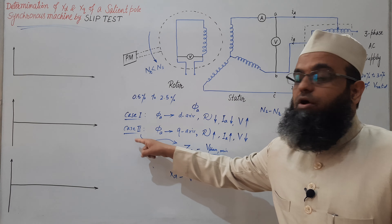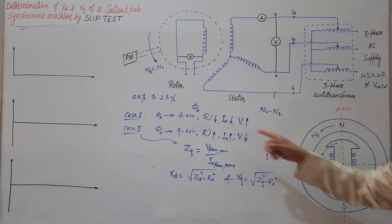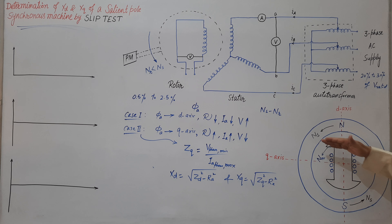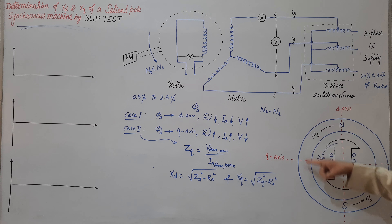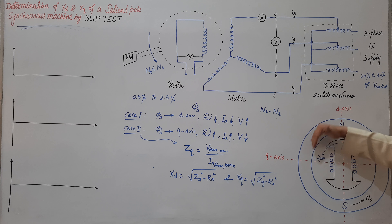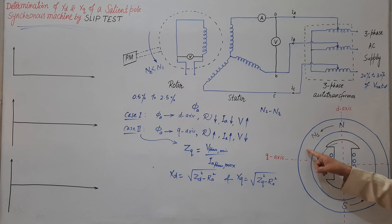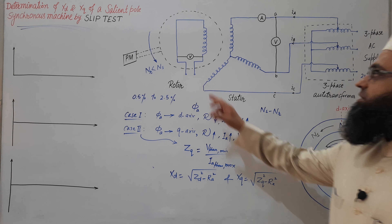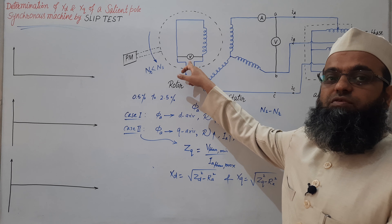What about case 2? When the axis of phi-a, the rotating magnetic field, aligns with the q-axis, at this moment the rate of cutting the armature flux by the field winding conductors is maximum, as this field is rotating at constant speed ns. So at this moment d-phi by dt will be maximum, and that can be sensed and observed with the help of this voltmeter.